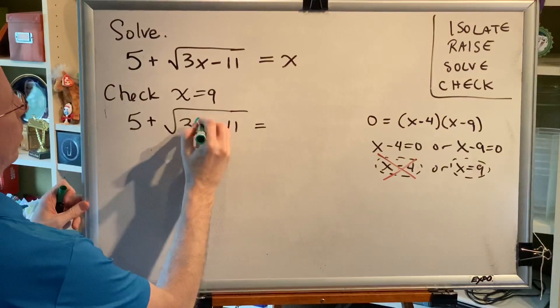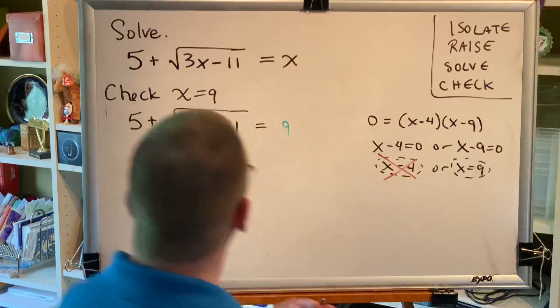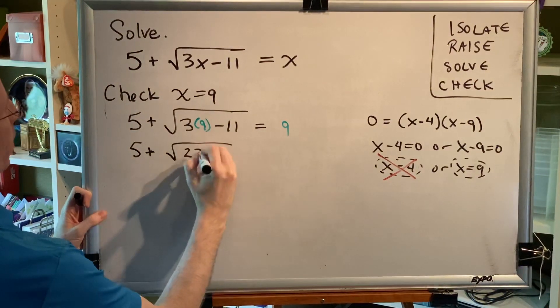Everywhere you see an x, put a 9. And simplify just as before. So 3 times 9 is 27.